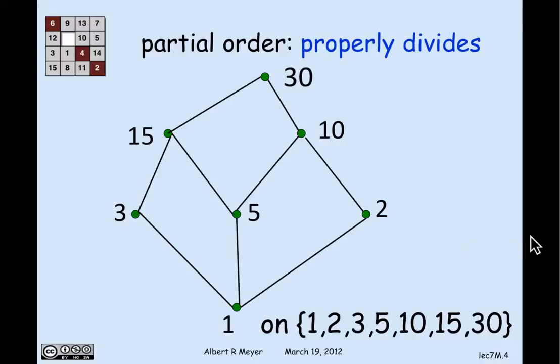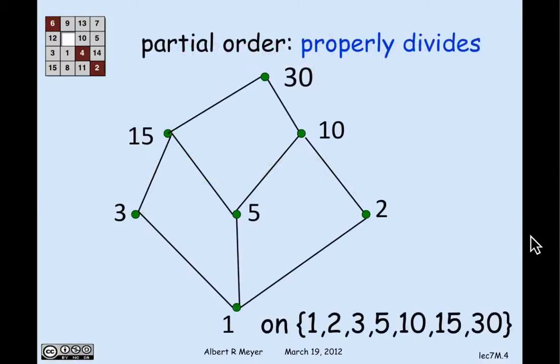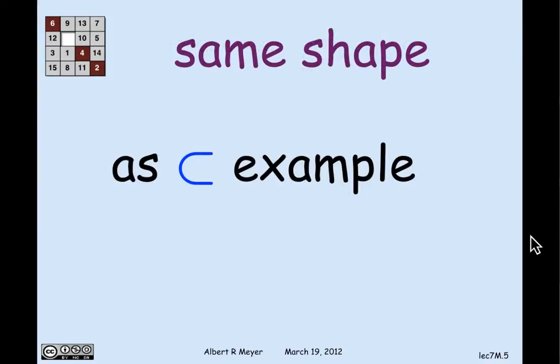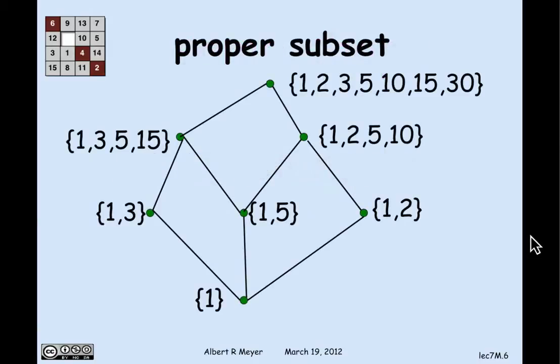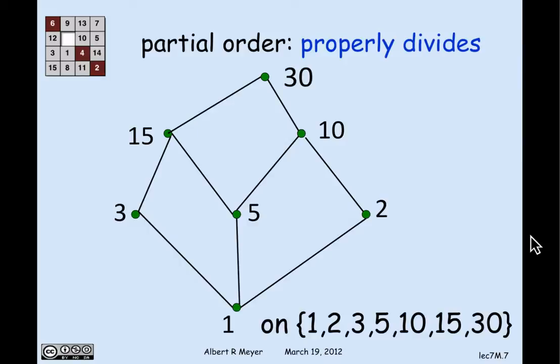And of course, the point of this picture is to show that the proper divides relation on these seven numbers has exactly the same shape as the proper subset relation on those seven sets. So there's the seven sets and their proper subset relation shown by the picture followed by the proper divides relation on this set of seven numbers.